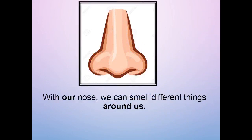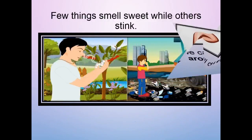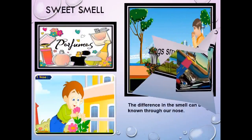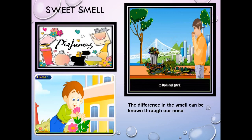Third is our sense of smell. With our nose we can smell different things around us. A few things smell sweet while others stink. For example, we can smell sweet things like perfumes with the help of our nose. We can smell bad things like garbage with the help of our nose. The difference in the smell can be known through our nose.